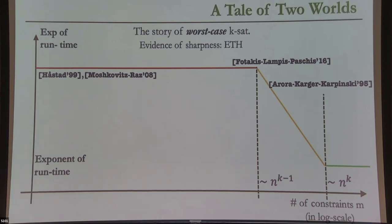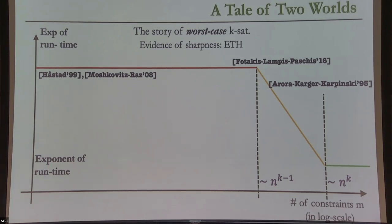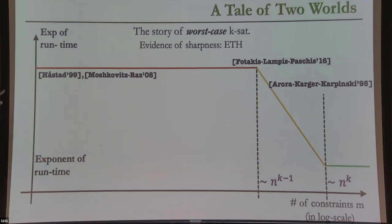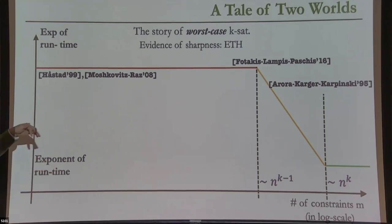In the worst case, the first non-trivial change from exponential time to slightly sub-exponential time occurs once you have N^{K-1} constraints. This curve represents the best-known algorithms, and it's also tight assuming the Exponential Time Hypothesis (ETH). Between N^{K-1} and N^K there exists a sub-exponential algorithm, tight under ETH. Then a polynomial-time algorithm starts existing once you have omega(N^K) constraints. The yellow curve is linear because I'm drawing the exponent of running time against the exponent of N in the number of constraints — a linear interpolation from exponential to polynomial time as constraints vary from N^{K-1} to N^K.